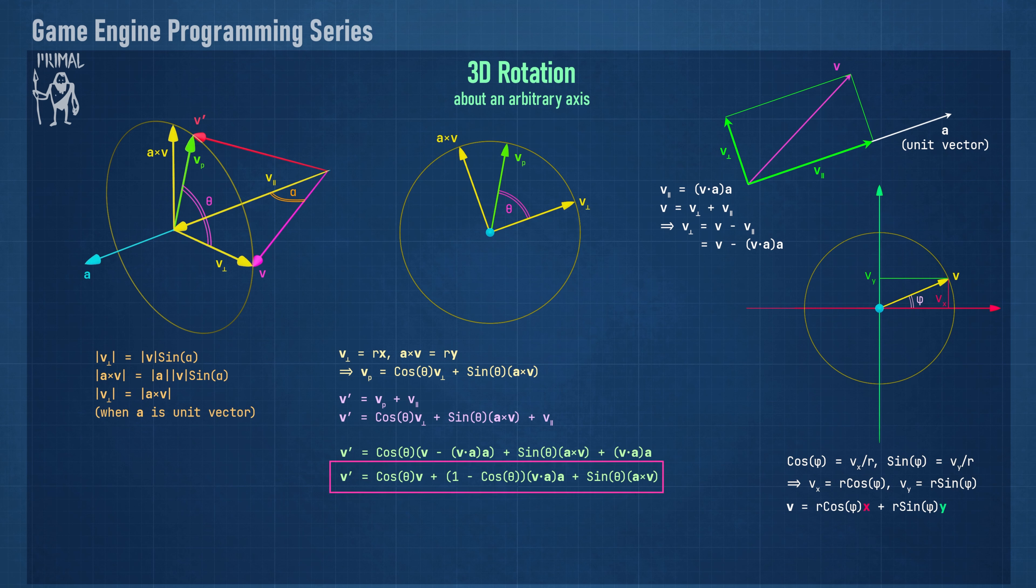The transformed vector v prime is again the sum of its components, which are all known at this point. Writing each component explicitly in terms of v and a and refactoring, we get the final equation for rotating v around the unit axis a. Please remember this last equation as it will come back in our discussion of quaternions. As an exercise, you can try to reproduce the 3D rotation matrices from earlier when the rotation vector a is one of the x, y, and z axis.